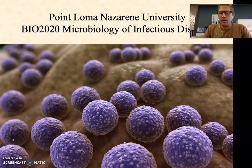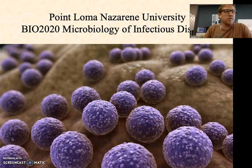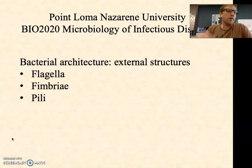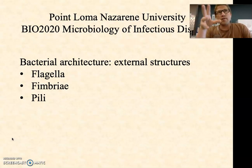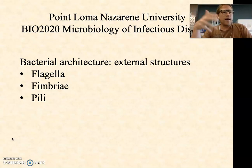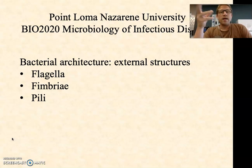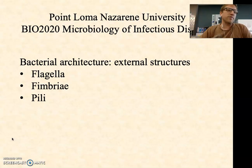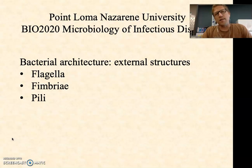Hey everybody, welcome to Microbiology. We are in the middle of a series on the basic architecture of prokaryotic cells, specifically bacteria. In the last video, we gave an overview of the general bits and pieces that go into a bacterium. We talked a little about the cytoplasm, the genome, the chromosome, and extra chromosomal pieces of DNA called plasmids. What I want to do in the next couple of videos is talk about external structures that we find commonly in bacteria.